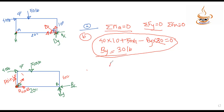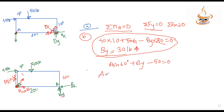The moment equation gives: the upward reaction component plus By upward minus 50 downward equals zero. Solving for By, we can take the unknown and calculate the value. From the moment equation, By is found to be 23.09 pounds.